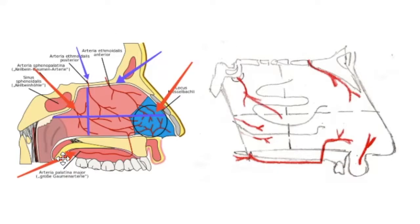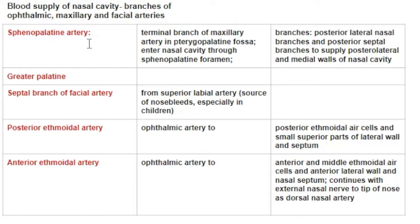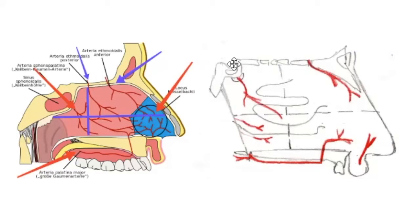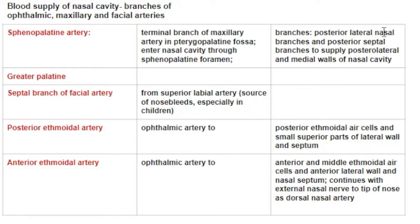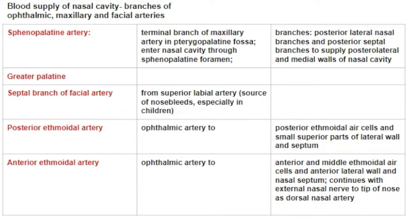One of the posterior septal branches continues inferiorly towards the antero-inferior aspect of the nasal septum, where it anastomoses with two other arteries. So far we've seen that the sphenopalatine artery enters the posterior superior aspect through the sphenopalatine foramen, giving posterior lateral nasal branches and posterior septal branches, with one branch continuing downward to form a rich capillary network with other arteries.